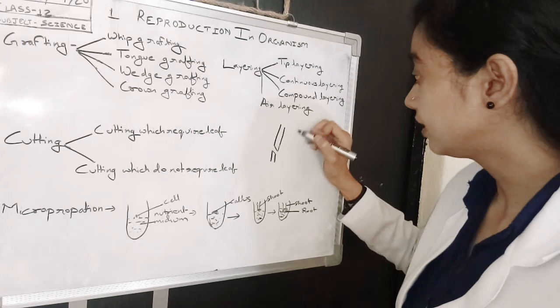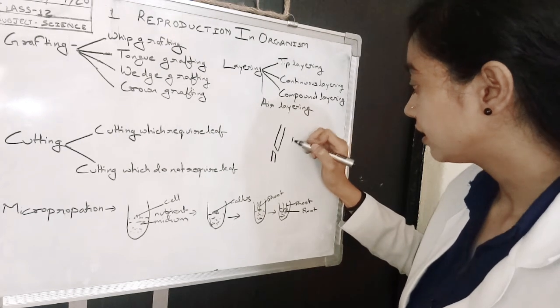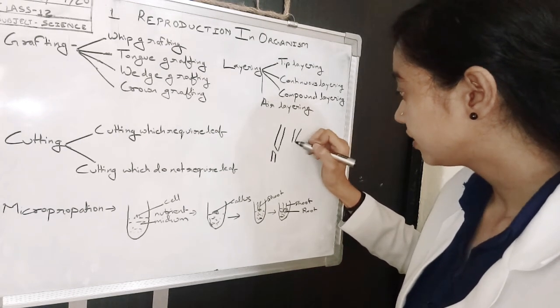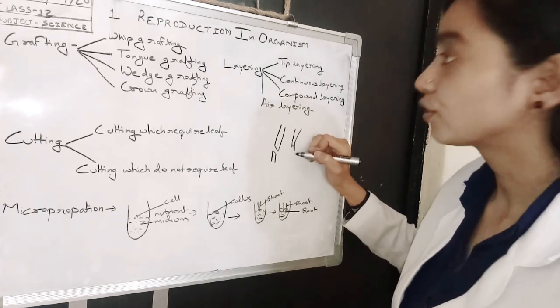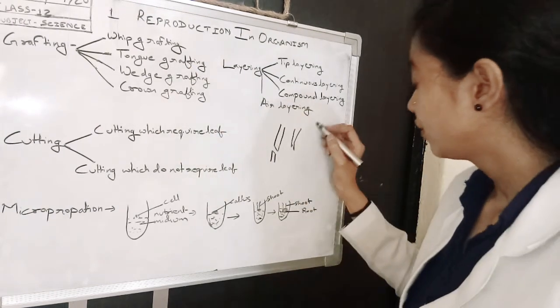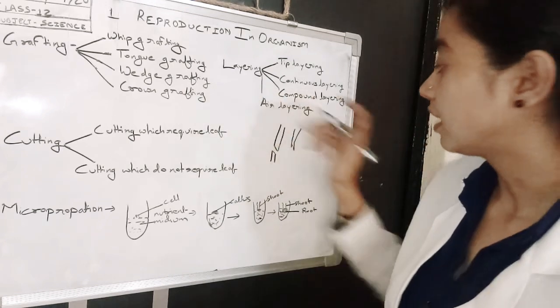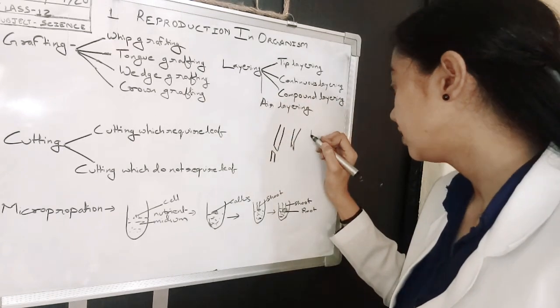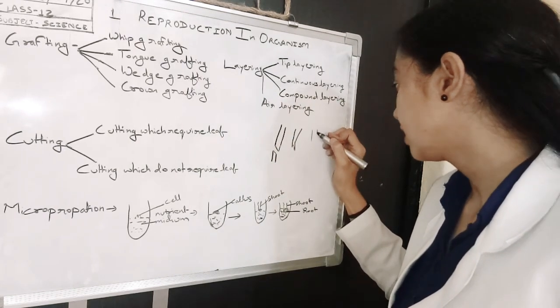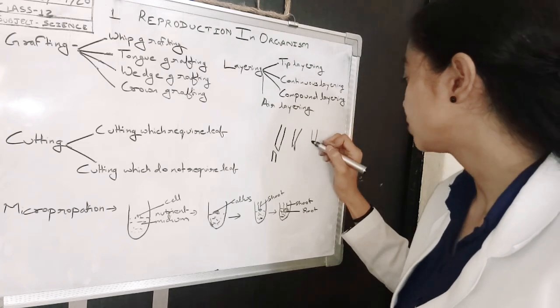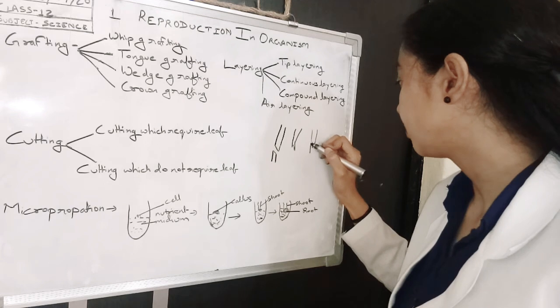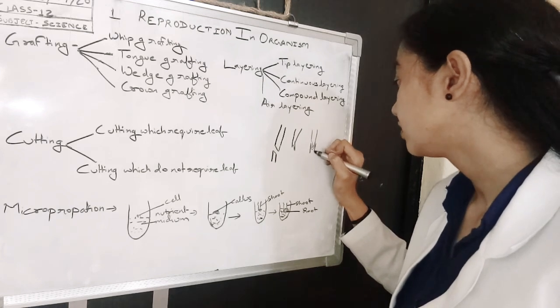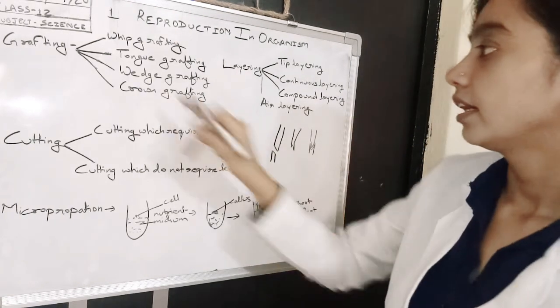If you are cutting it in this manner, this is called tongue grafting. In wedge grafting, you are taking equal thickness of both the shoot and cutting it in a tongue-like manner. This is called wedge grafting.